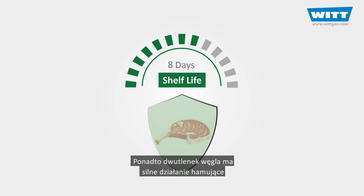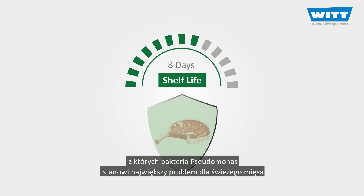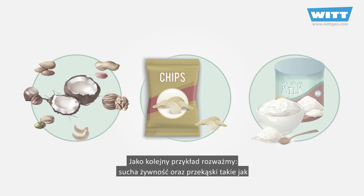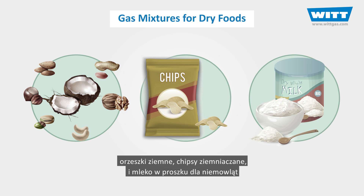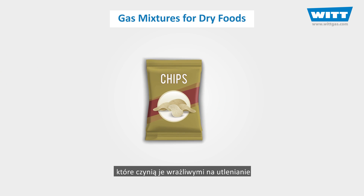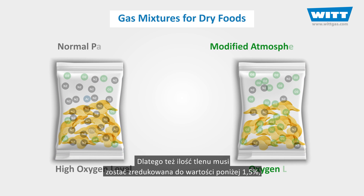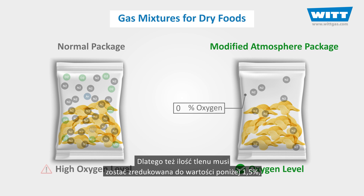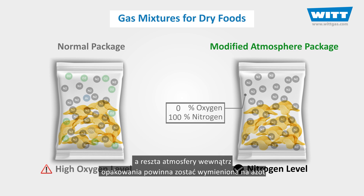Also, carbon dioxide has a strong inhibiting effect on the growth of bacteria, of which Pseudomonas presents the greatest problem for fresh meat. As another example, let's consider dry foods and snacks like peanuts, potato chips, and baby milk powder. These foods contain unsaturated fats that make them sensitive to oxidation and rancidity when oxygen is around. So the oxygen amount must be reduced to under 1.5%, and the rest of the air inside the package must be replaced with nitrogen.